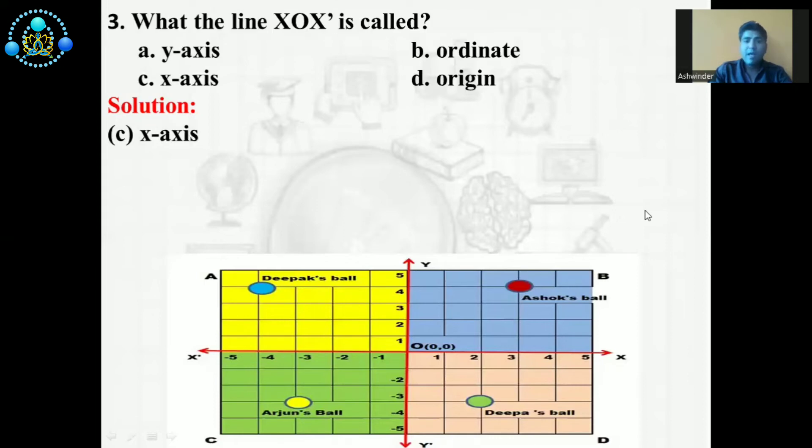What is the line XOX' called? There are four options. A: y-axis. B: ordinate. C: x-axis. D: origin.